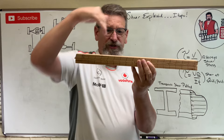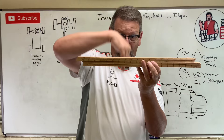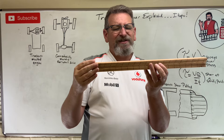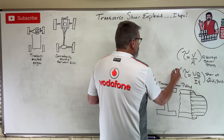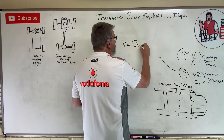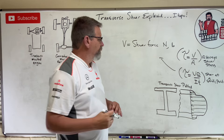So how does V over A, which we talked about as shearing one way, equate to a force going the other way? It seems like adding apples and oranges — an X shear to a Y shear. Let's talk about the components of the VQ/IT equation. You've got V, which is the shear force, in units like newtons, pounds, kilonewtons, or kips.